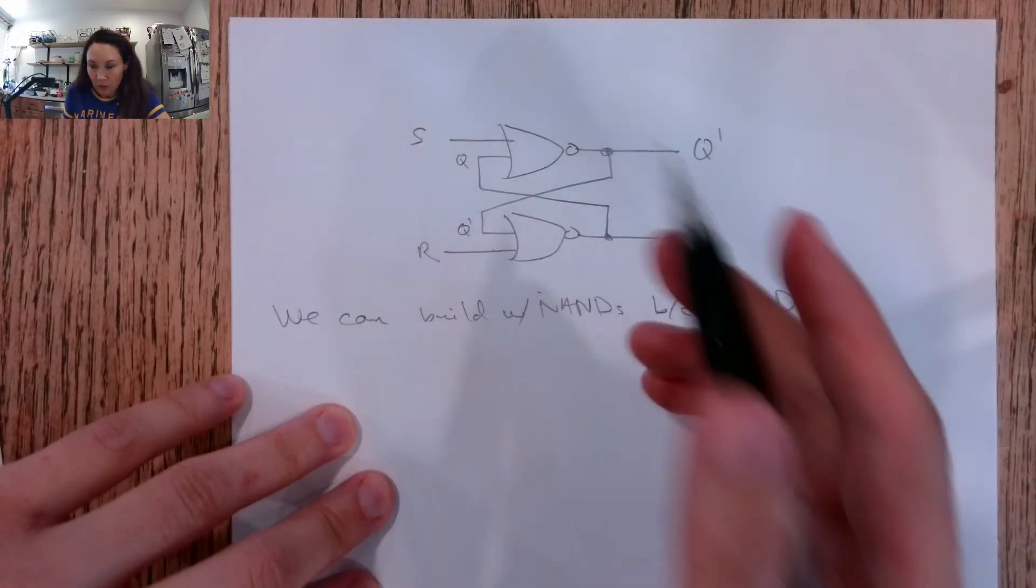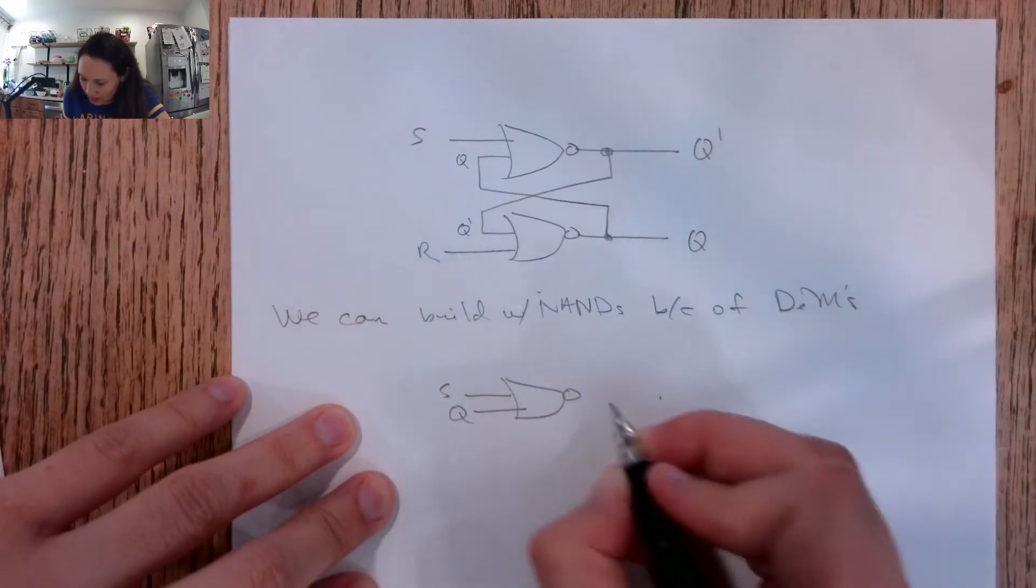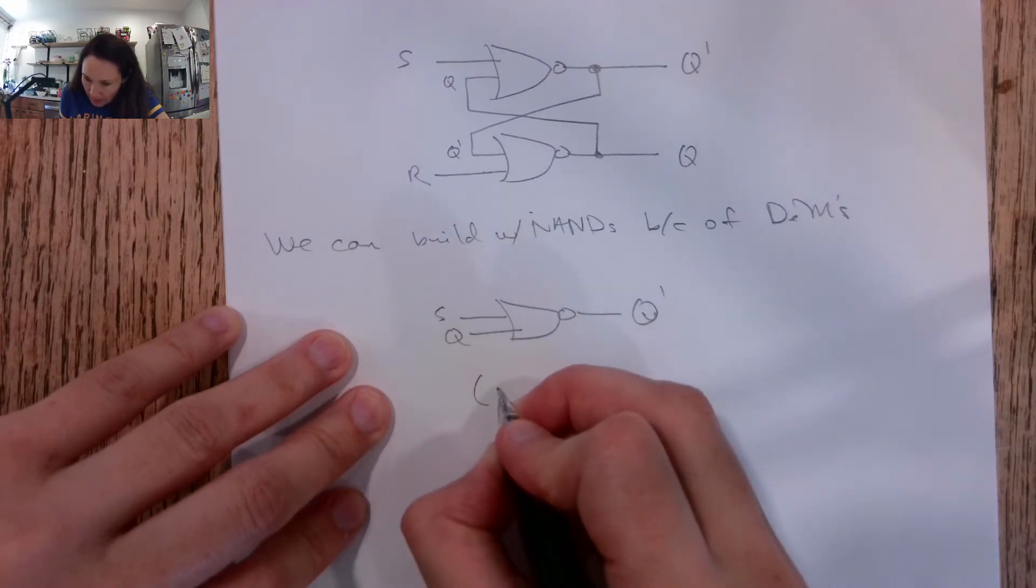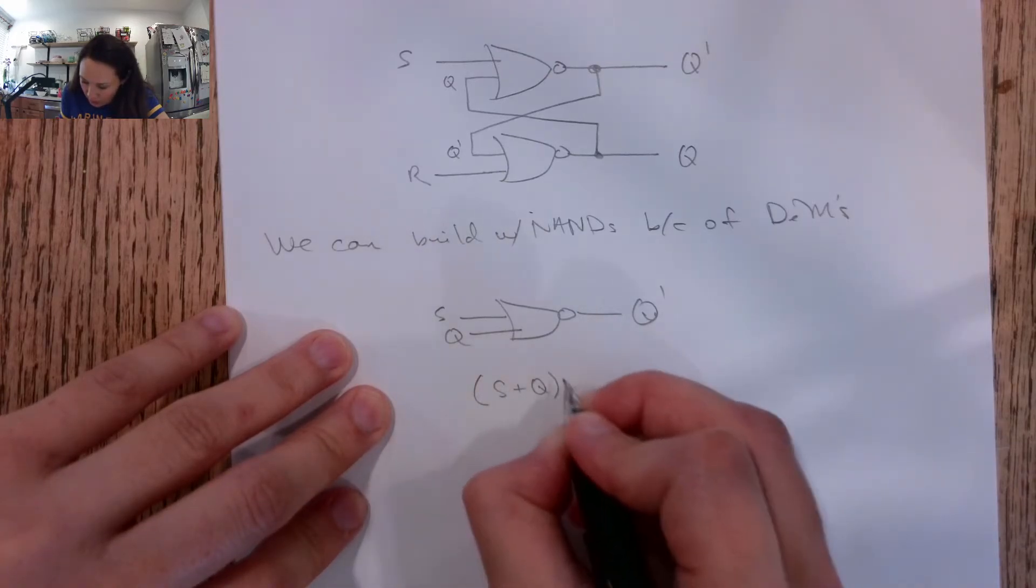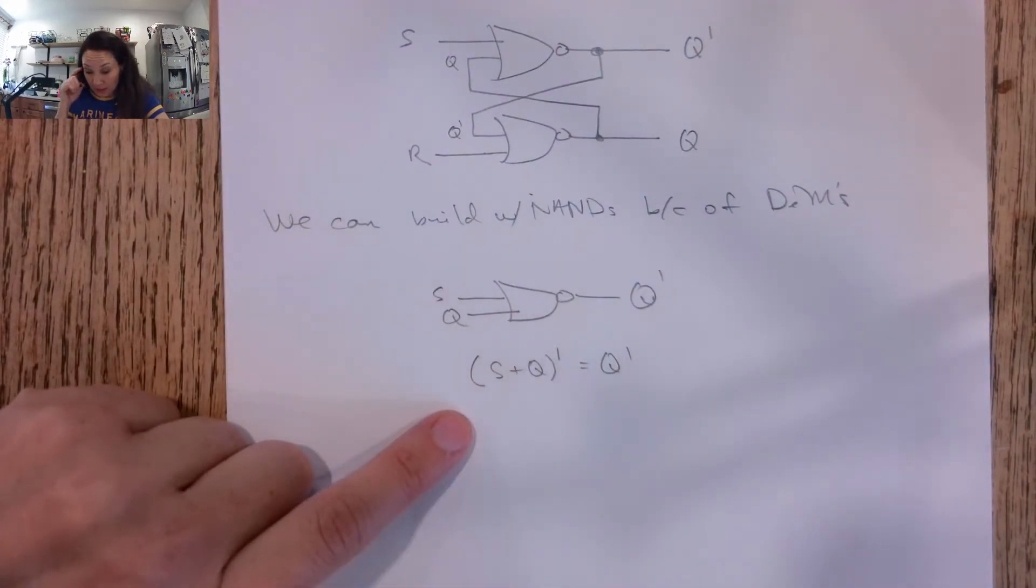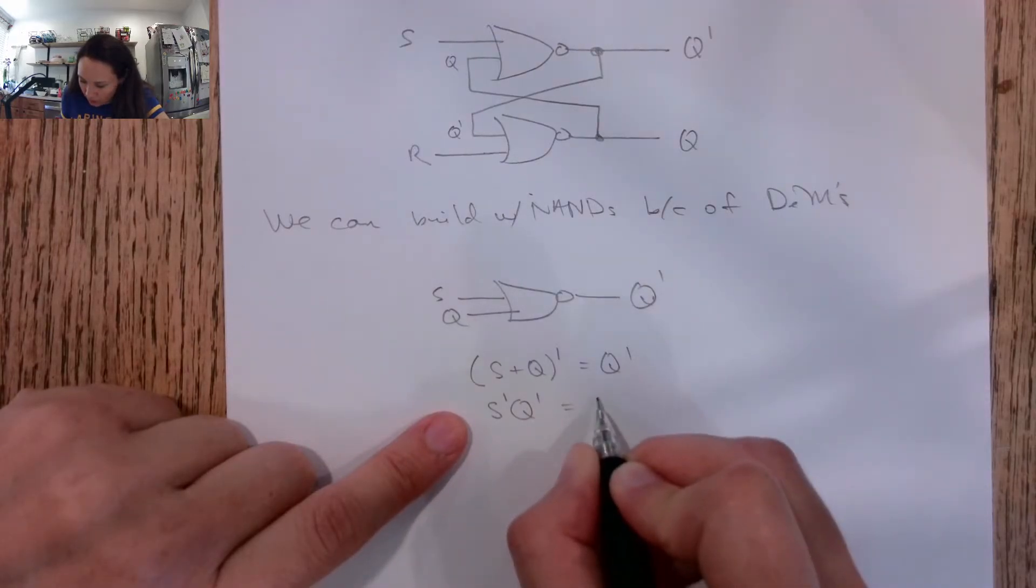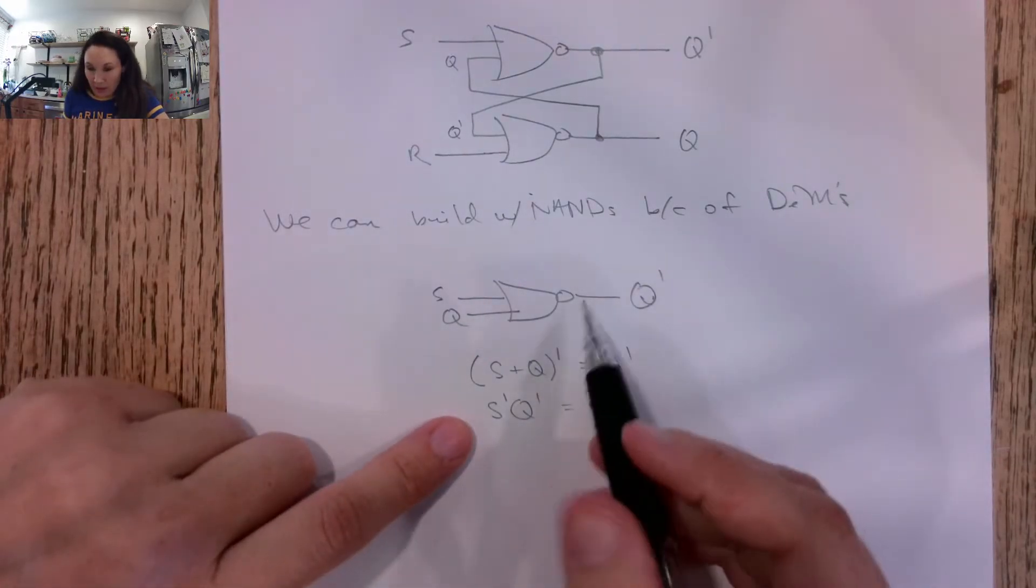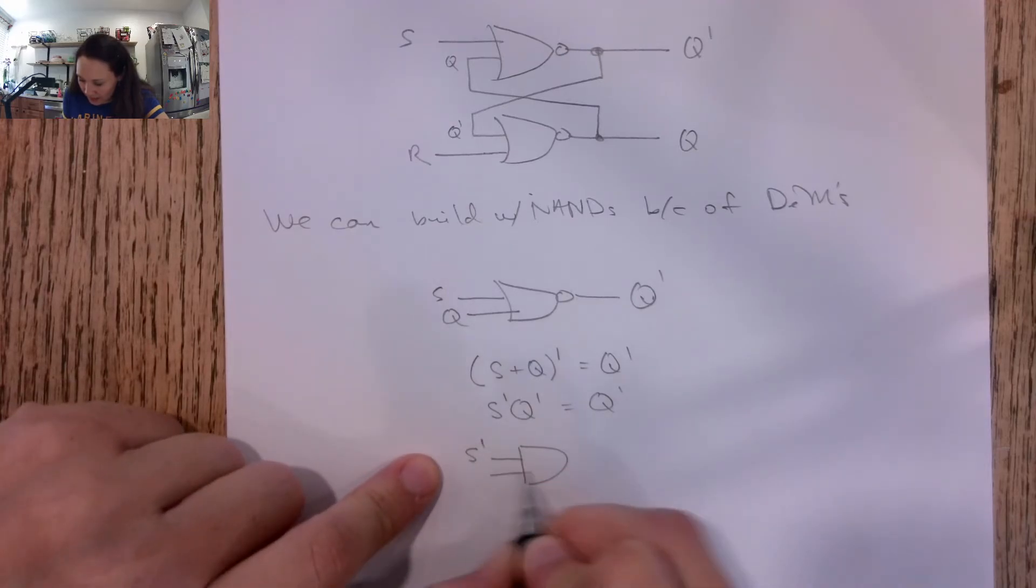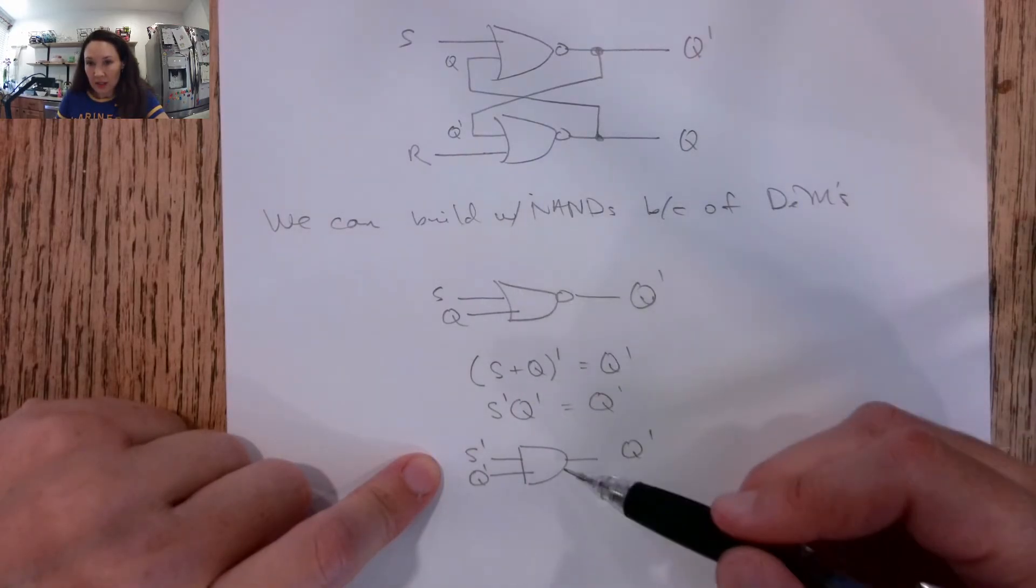If we take this first NOR, what does it look like if we zoom up on it? Well, it has an input of S and an input of Q, and then the output here is Q naught. Written in Boolean algebra, this looks like S or Q naught is equal to Q naught. So if I apply De Morgan's to this left-hand side here, this gives me S naught. I replace the OR with a NAND. Q naught is equal to Q naught. So that means this NOR I can replace with a NAND, as long as I negate my inputs before they go into the NAND. And this will give me Q naught. So logically, this thing is equivalent to this.